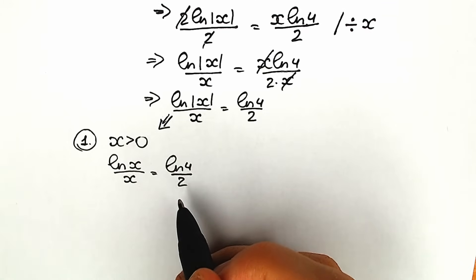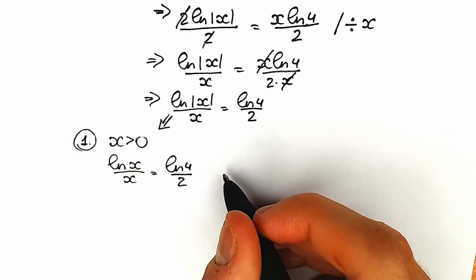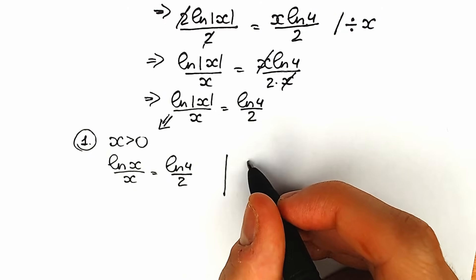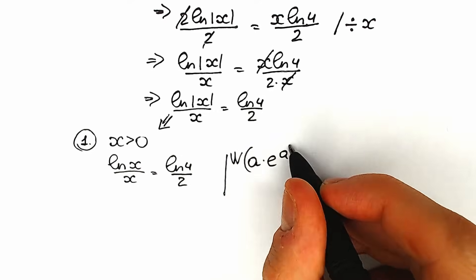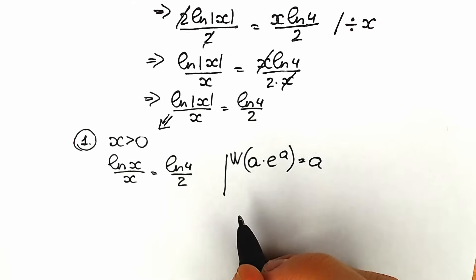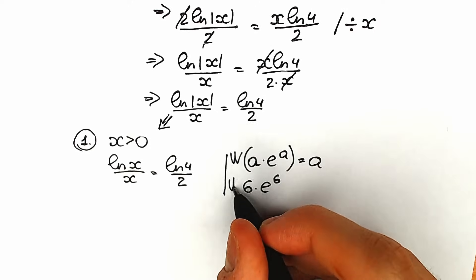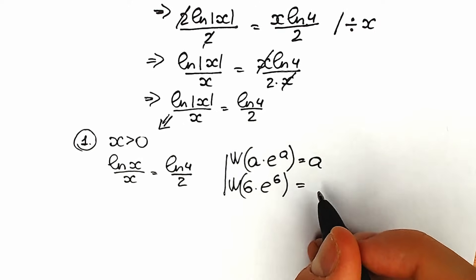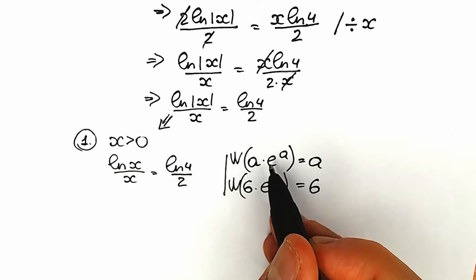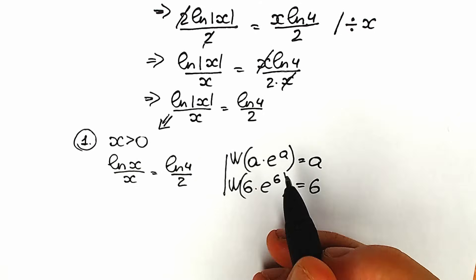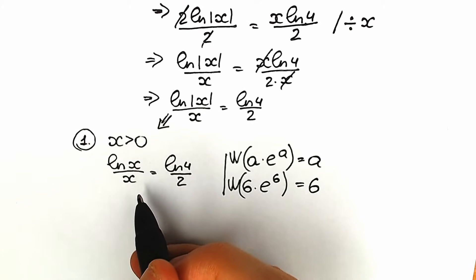I suggest you learn a little about the Lambert W function. Whenever we have an expression of the form a·e^a and apply the Lambert W function to it, the result is simply a. For example, W(6·e^6) = 6. We need to get our expression into that form, but right now we don't have e, so let's try to create it.